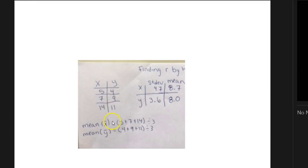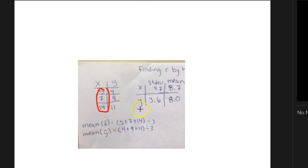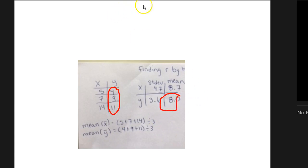I actually found my mean right here. I took my 5, my 7, and my 4, made a small table, added them together, and divided by 3 — that is how I got 8.7. You can do the same with the standard deviation using your calculator. I took these values, added them, and divided by 3 because there were three of them. I did the same for the y values: I added them together and divided by 3, so that's how I got 8.